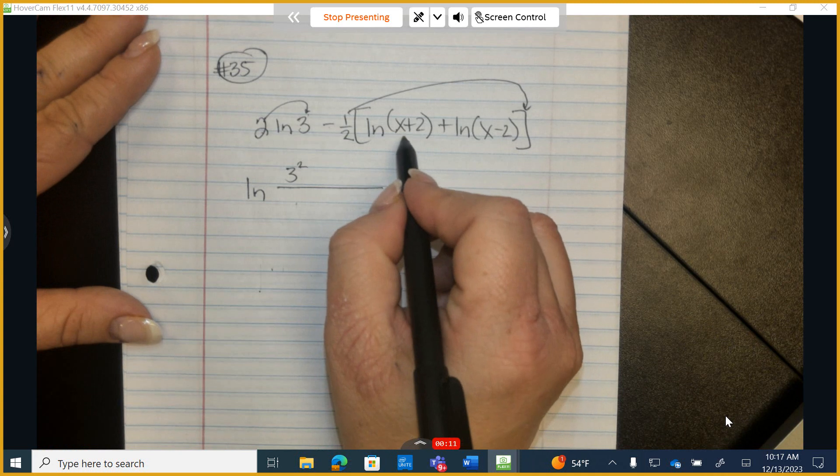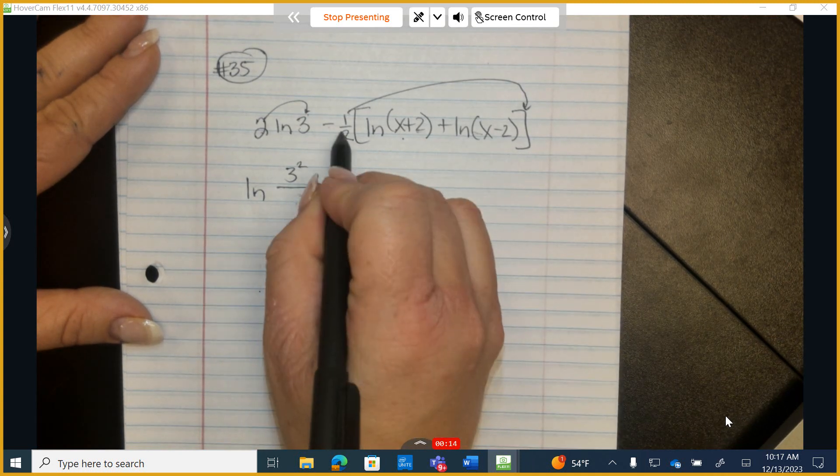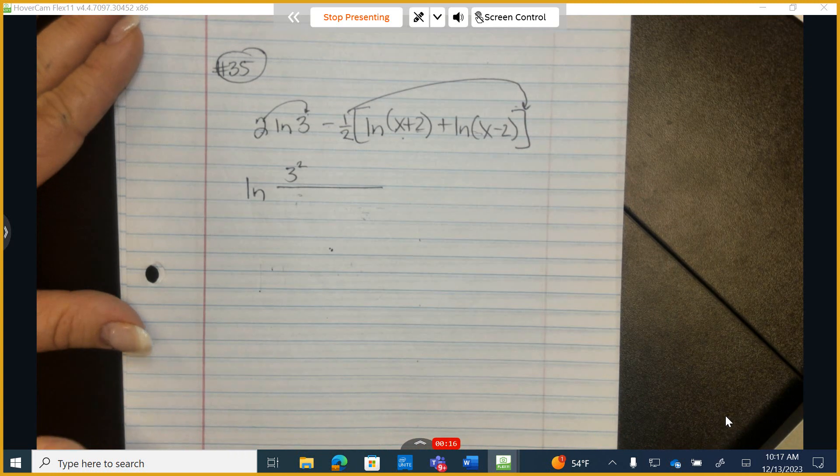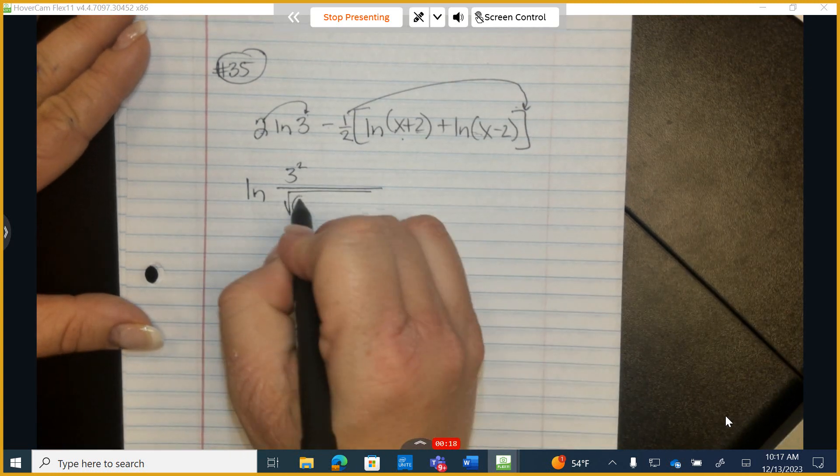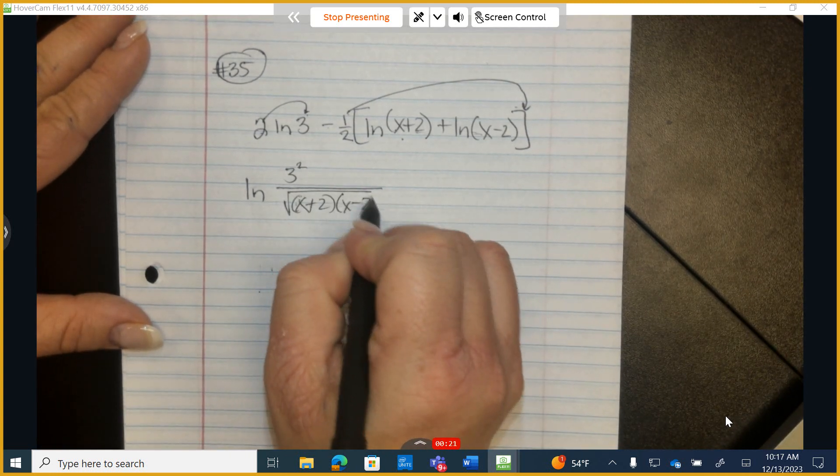And then on the bottom, I can multiply these two quantities, but not only that, I need to have the square root of those two quantities, square root of x plus 2 times x minus 2.